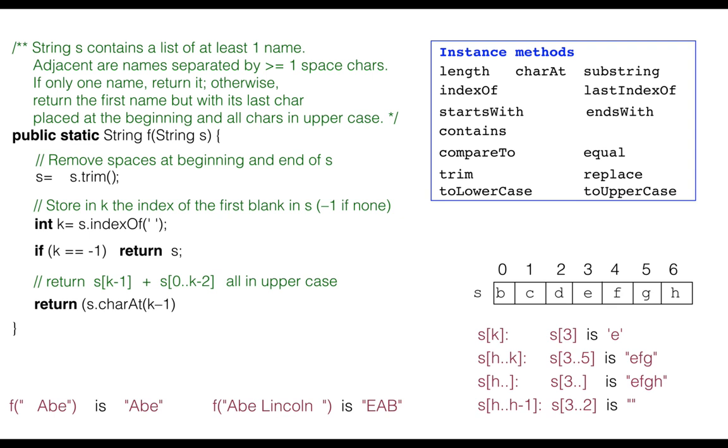Next comes the substring s sub 0 through k minus 2. We use function substring, but note that the second argument is k minus 1 and not k minus 2 because of the way substring is defined.